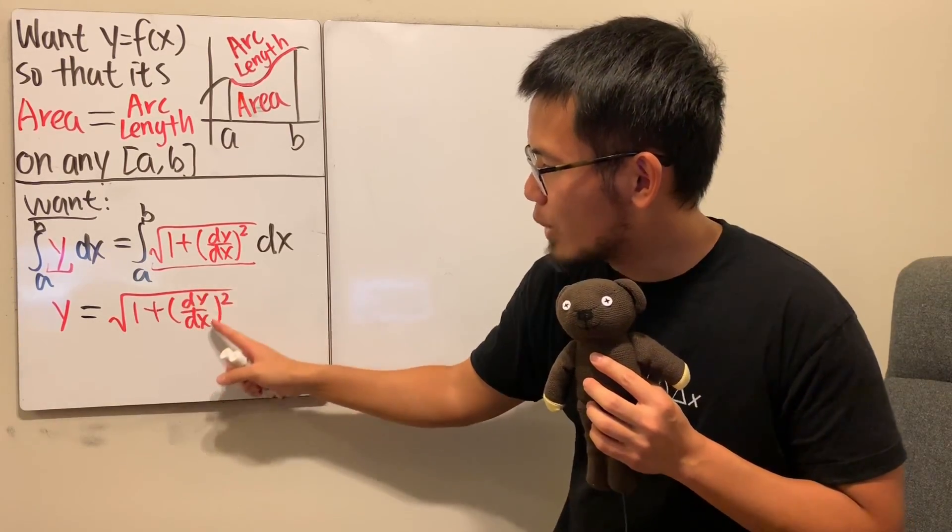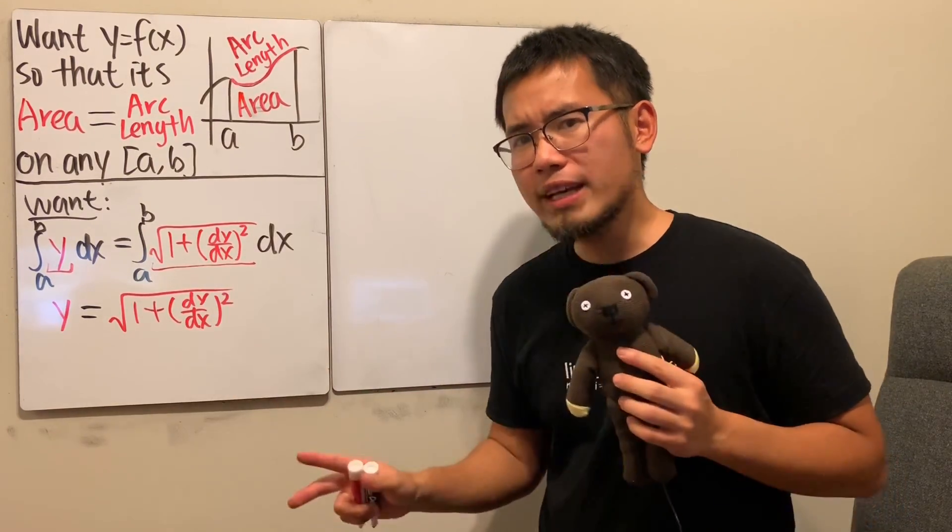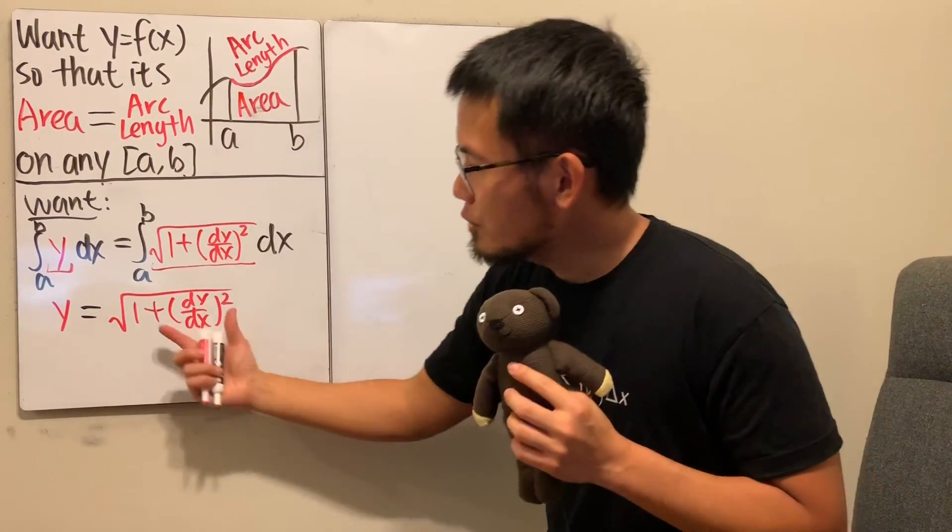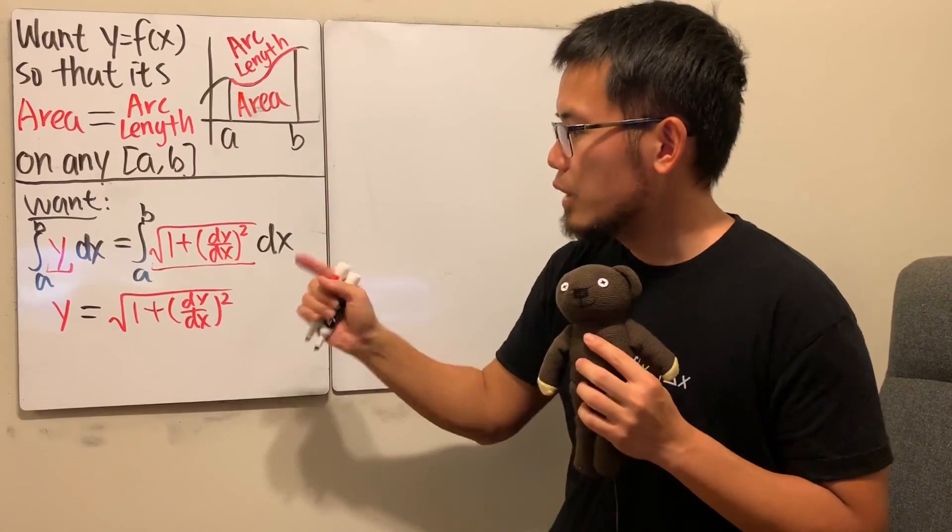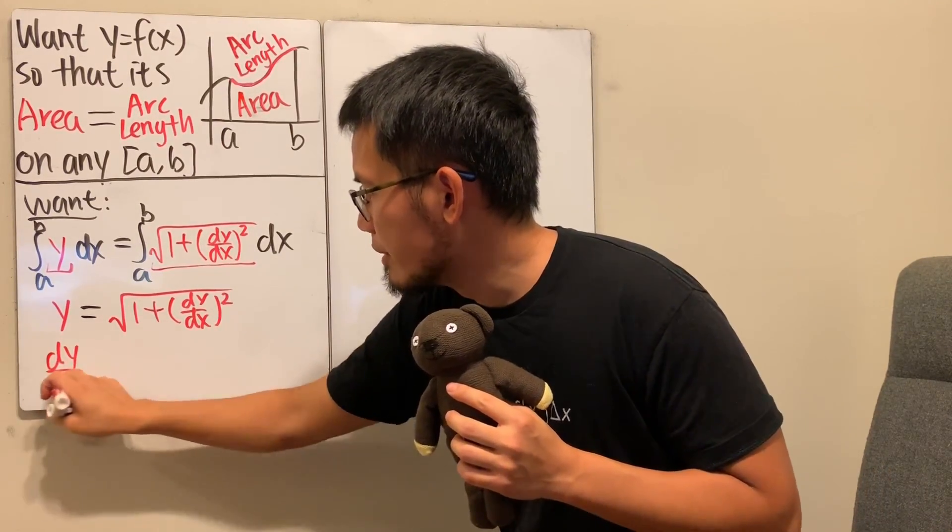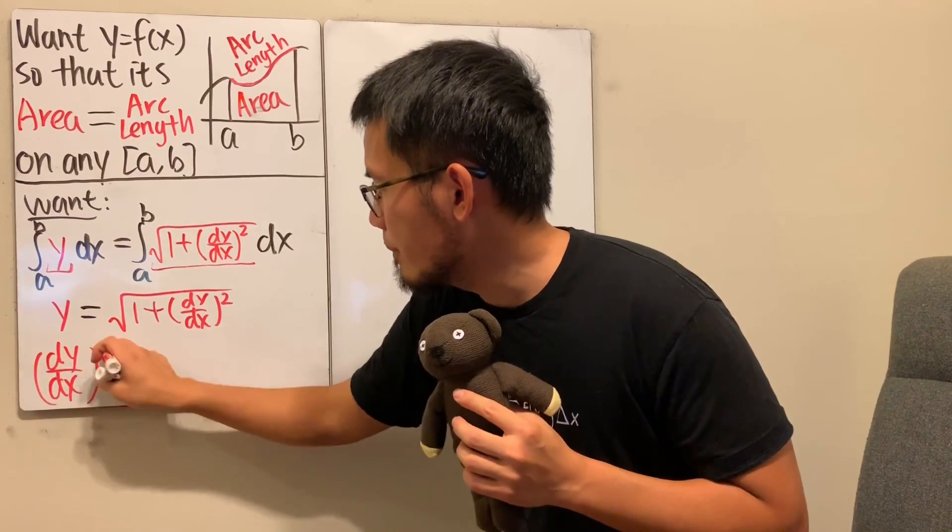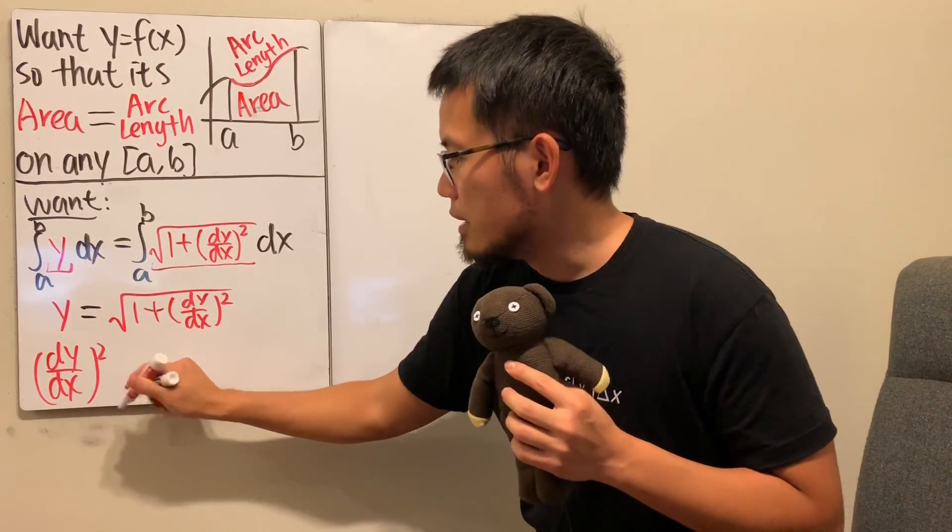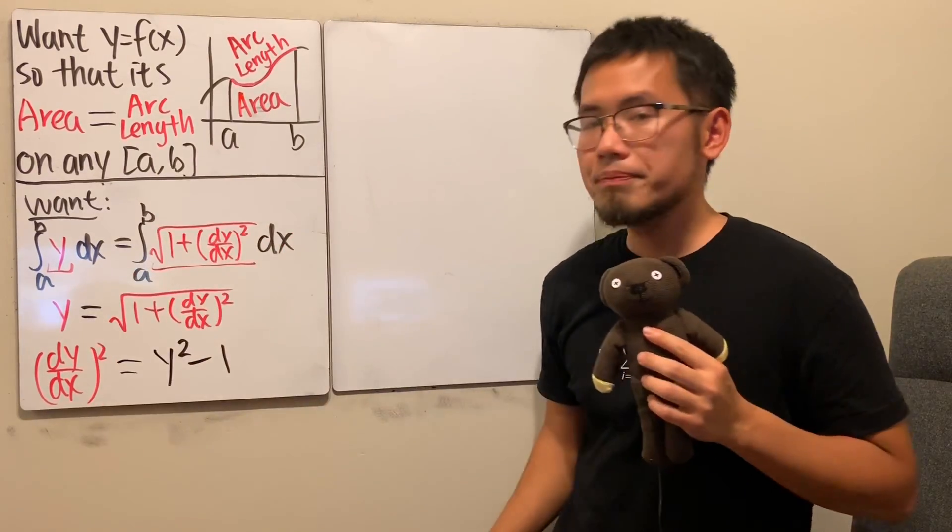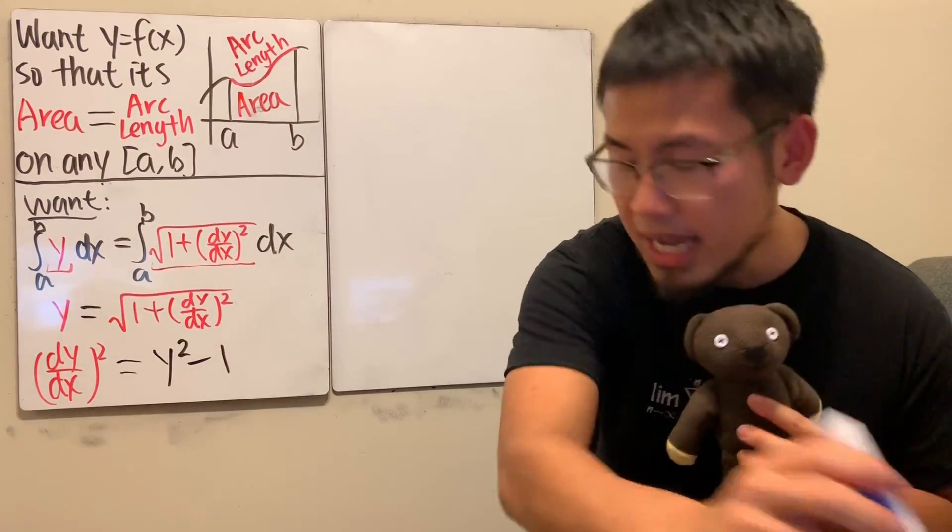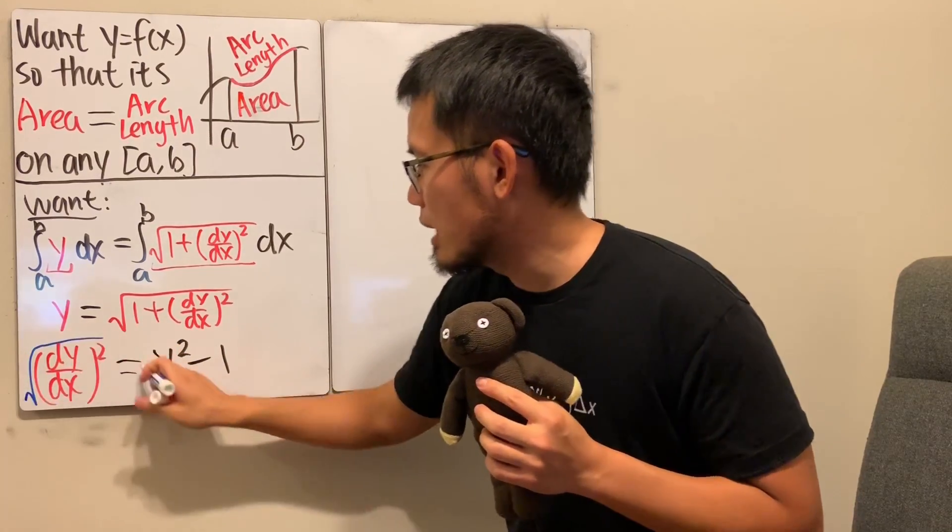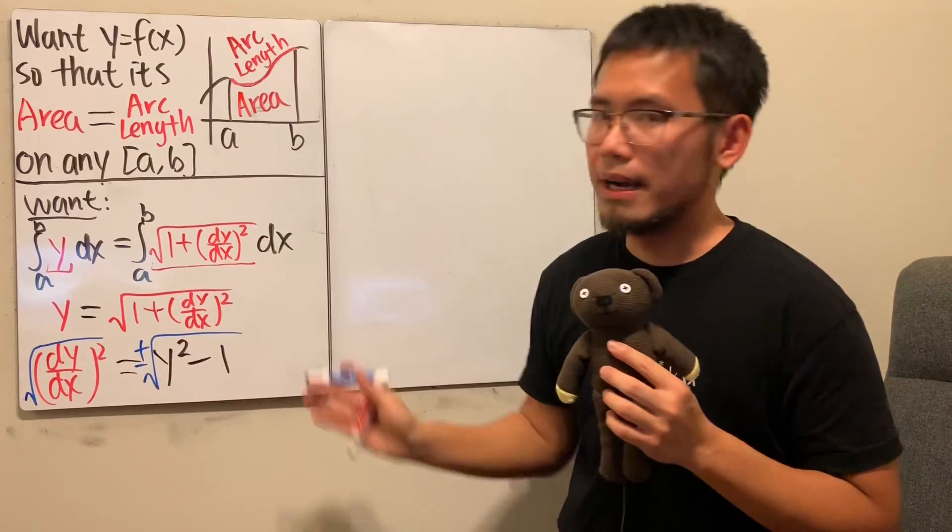Well, we only have the dy/dx right here, it would be a great idea if we isolate that part first. We can do so by first square both sides and then minus 1 both sides and you will see that, let me put this down first, dy/dx and when we square that will be equal to y square minus 1. And then because we have the second power here we can just take the square root on both sides and technically again, the plus minus,